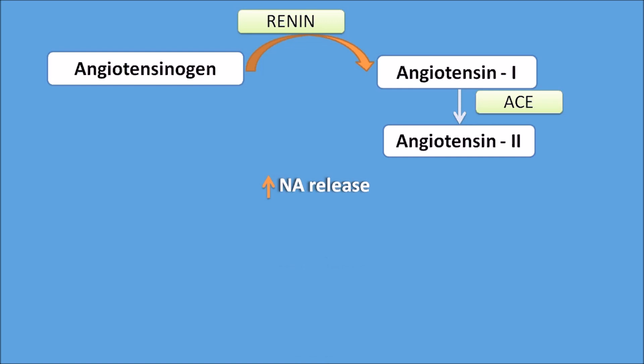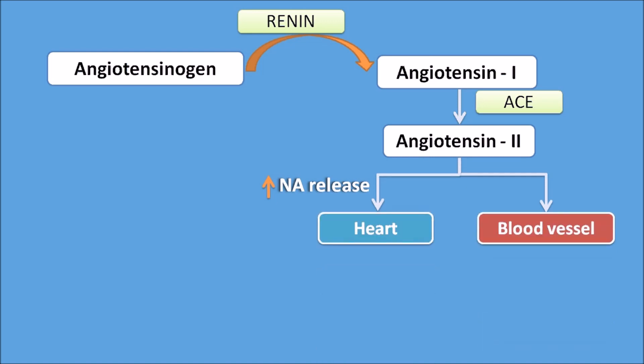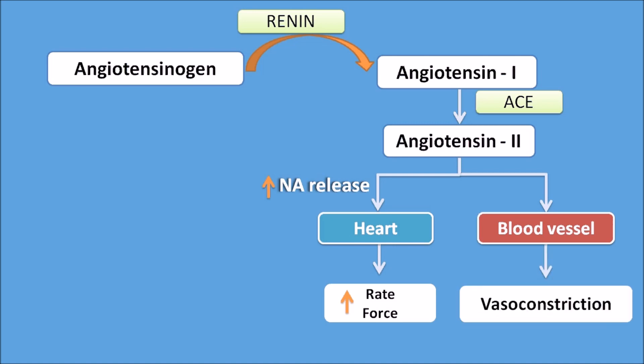Angiotensin II acts on two main organs: the heart and blood vessels. On the heart, it acts indirectly by increasing noradrenaline release, thereby increasing the rate and force of contraction. On blood vessels, it acts directly to produce vasoconstriction.